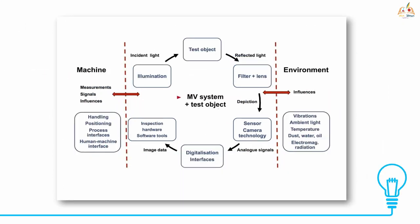Let's see the MV system and how the machine and environment influence it. First, by illumination — the incident light falls on the test object and the reflected light enters the filter plus lens. By depiction, they enter the sensor and camera technology. The analog signals undergo digitalization via interfaces and the image data is inspected using hardware and software tools.